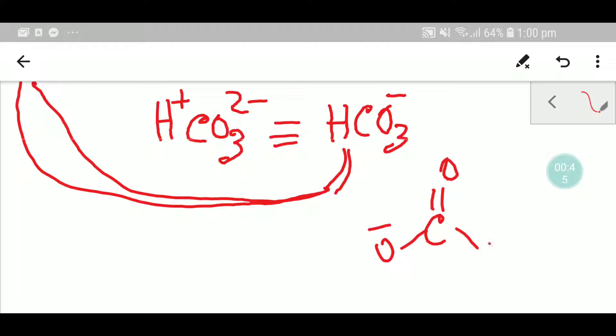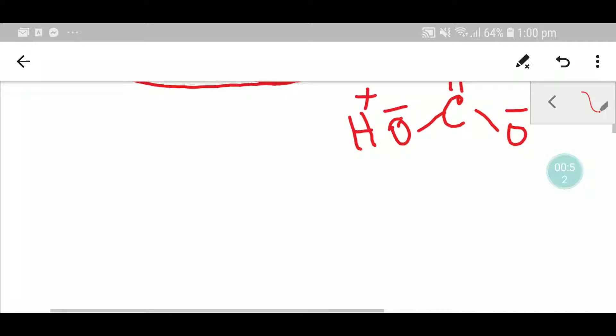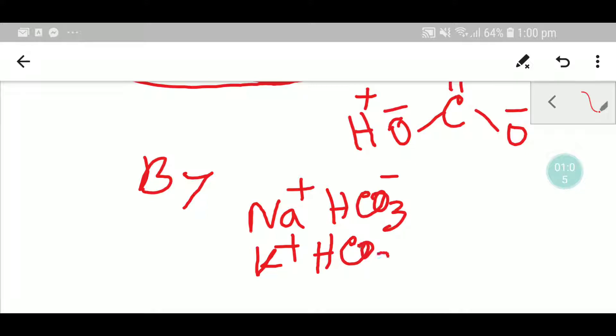This is the formula of carbonate, and you just have to add one H+ here, and this is the formula of bicarbonate. By using bicarbonate, you can get the formula of sodium bicarbonate, NaHCO3, or potassium bicarbonate, KHCO3.